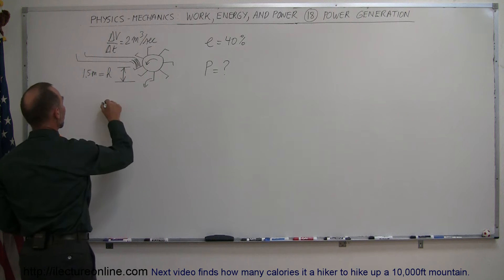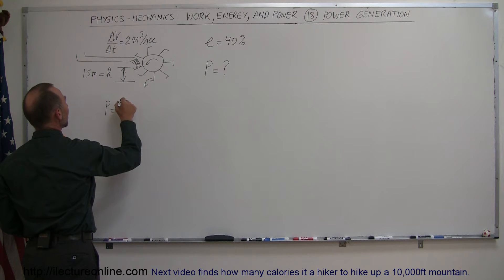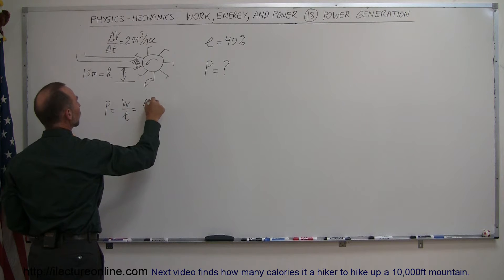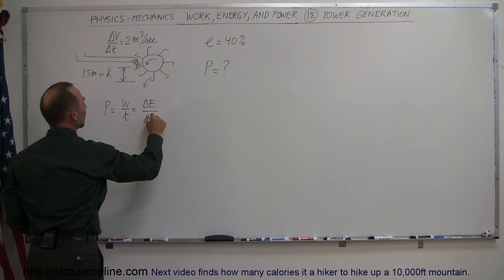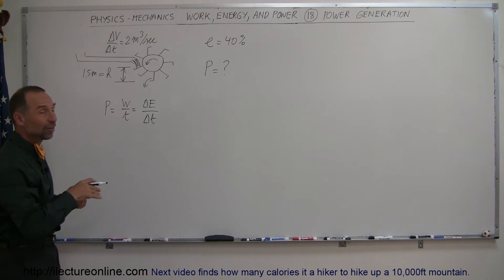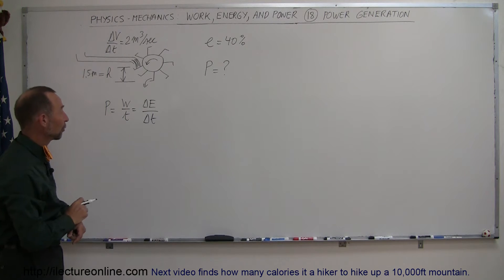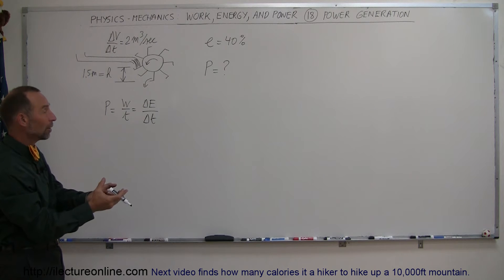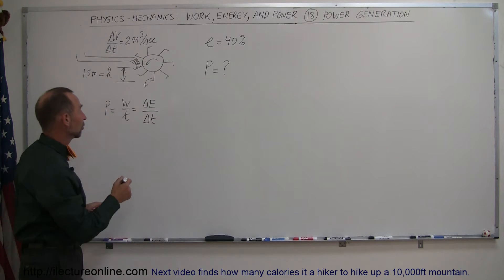Well, again, we can use the definition that power is equal to the work over time or the change in energy over time. The change in energy is the loss of the potential energy of the water is then converted into power. So here's the other way around. We're taking the energy of the water and converting it into power and electricity.